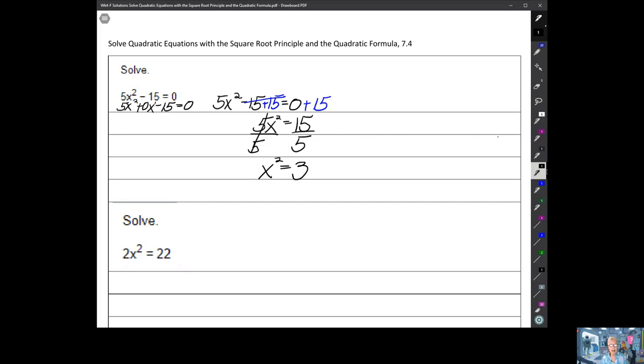Anyway, here's what I've got. x² = 3. Now listen, we've talked about this. All positive real numbers, that is numbers in the real number system, have two square roots.